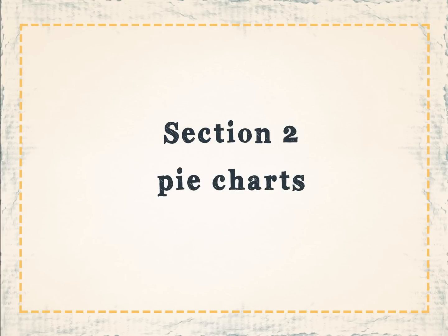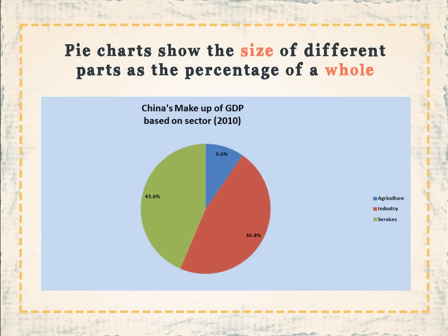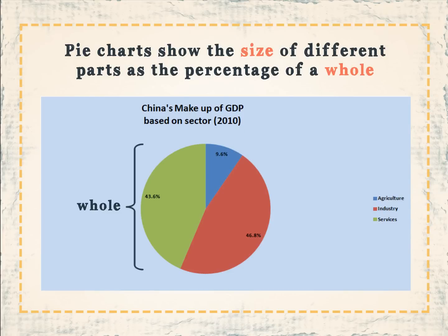Section 2: pie charts. Pie charts show the size of different parts as the percentage of a whole. As we can see by the following pie chart on China's makeup of GDP based on sector: 43.6 percent is related to service, 46.8 percent is related to industry, and 9.6 percent is related to agriculture. In total this equals 100 percent.